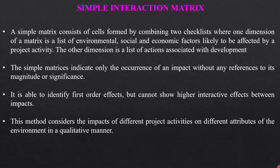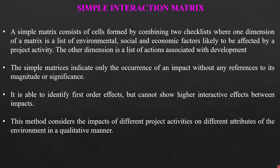The simple interaction matrix consists of cells formed by combining two checklists, where one dimension of the matrix is a list of environmental, social, and economical factors likely to be affected by the project activity, and the other dimension is a list of actions associated with the development. The simple matrix indicates only the occurrence of an impact without any reference to its magnitude or significance. It is able to identify first-order effects but cannot show higher interactive effects between impacts. This method considers the impacts of different project activities on different attributes of the environment in a qualitative manner, not quantitative.